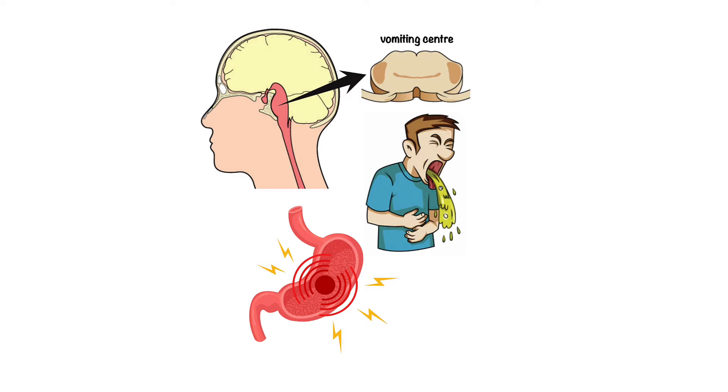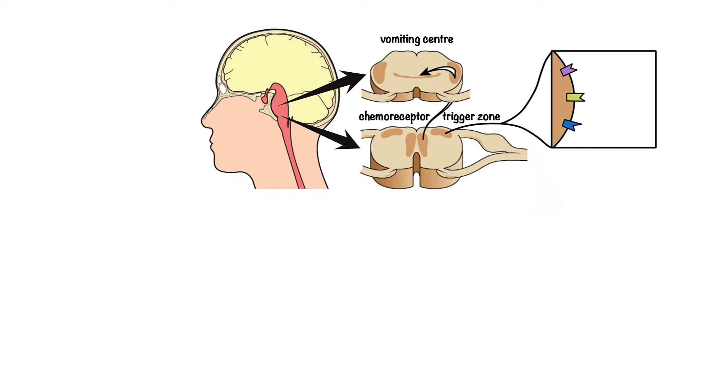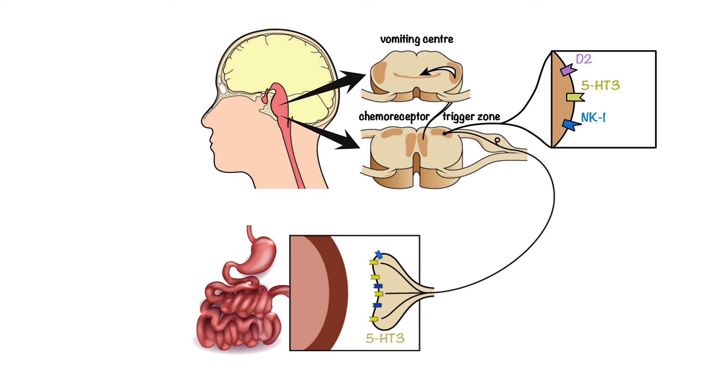The chemoreceptor trigger zone, located near the vomiting center, which expresses receptors such as dopamine D2, serotonin type 3, and neurokinin 1. The vagal afferent fibers from the gastrointestinal system, which express serotonin type 3 and neurokinin 1 receptors.